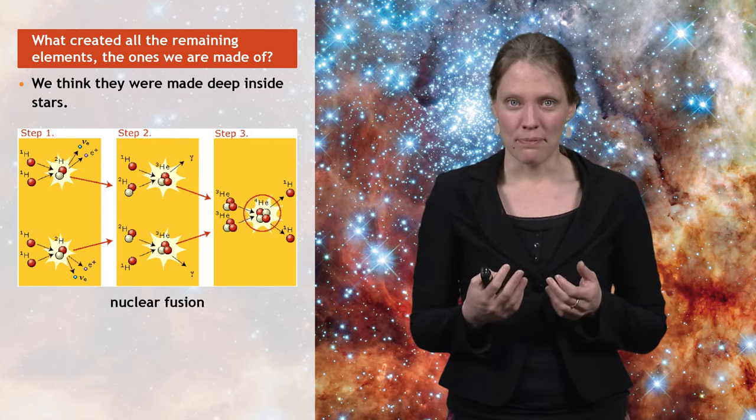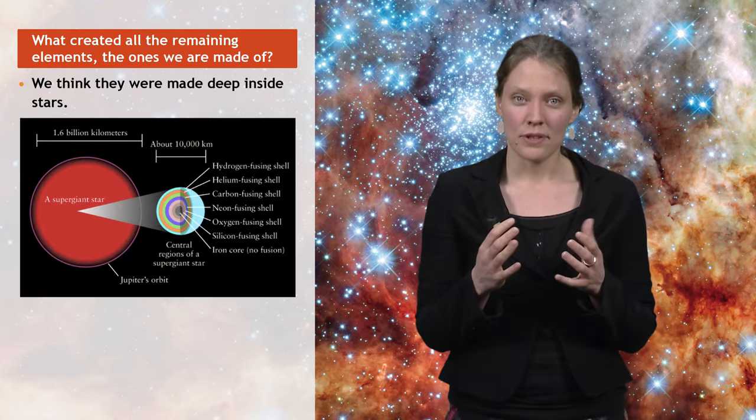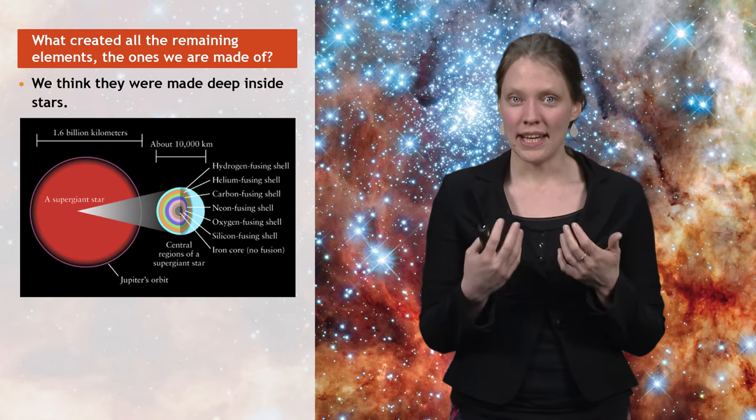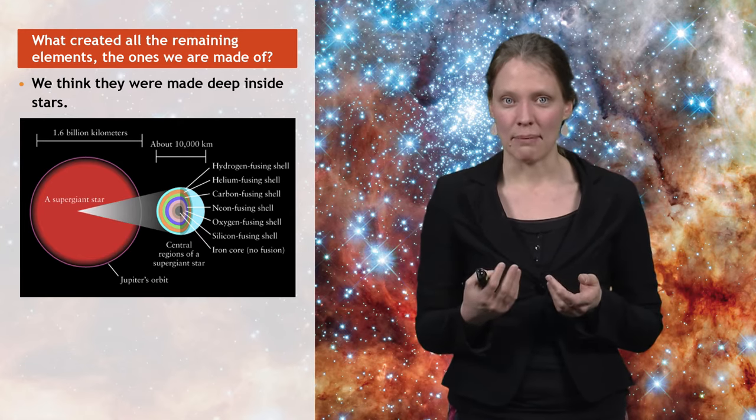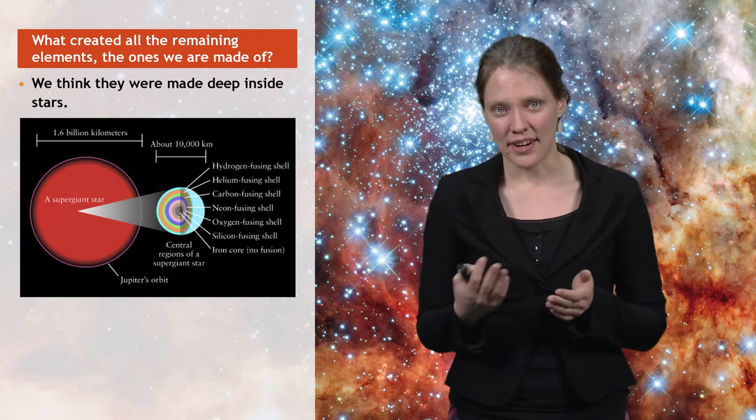If the star runs out of fuel, if it runs out of hydrogen in this very center, it will contract further, so that it becomes hotter, so that helium can be fused into the next elements, namely carbon and oxygen. This is where it ends for stars like our sun.